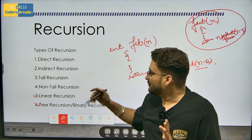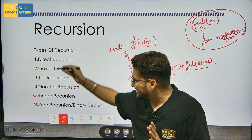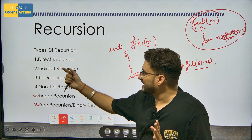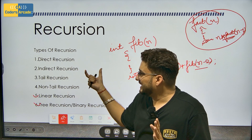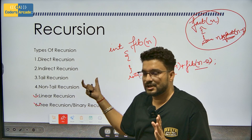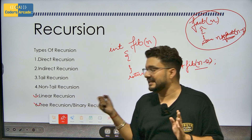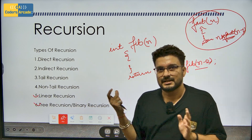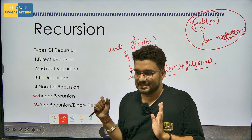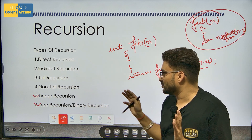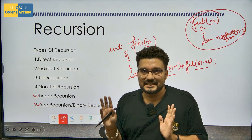So, types of recursion — we have six types: direct, indirect, tail, non-tail, linear, and tree recursion. Tree recursion is also known as binary recursion.